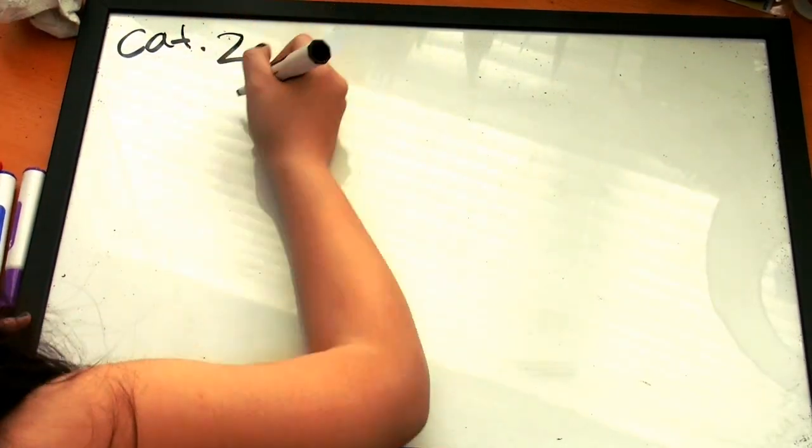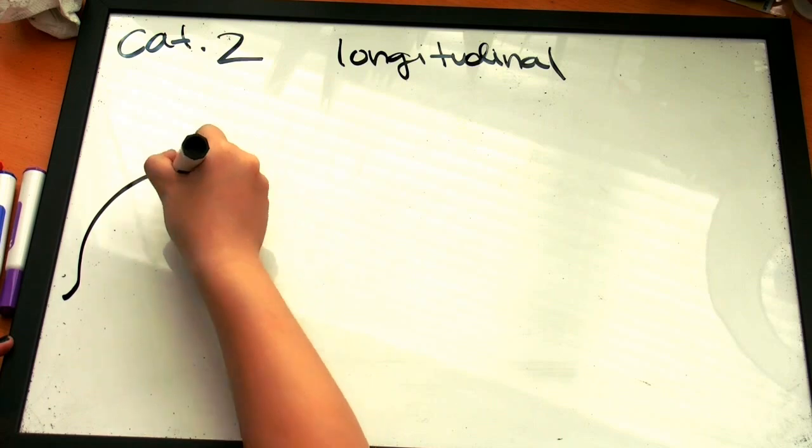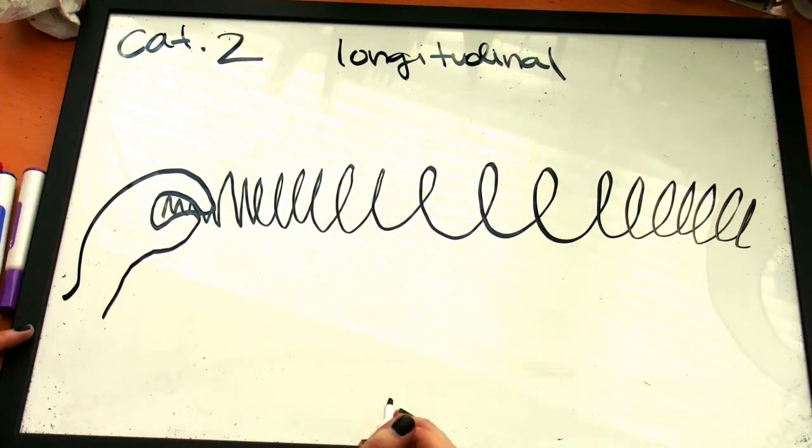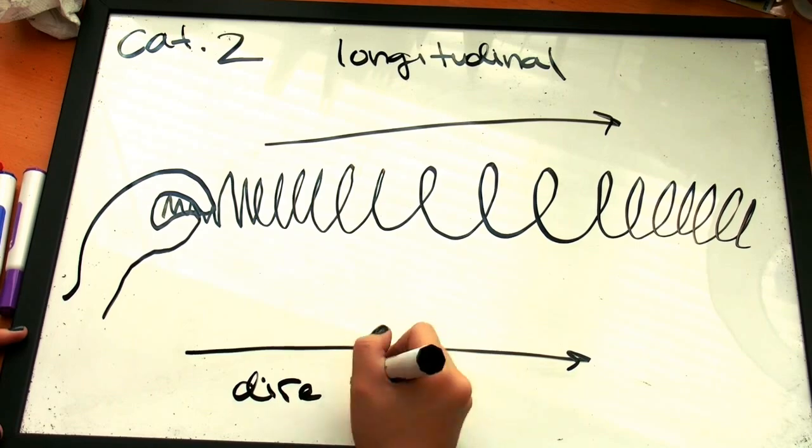The second is a longitudinal wave, which oscillates parallel to the direction of propagation. An example is when a spring is gathered up in coils and then released. The wave is both oscillating and being propagated in the horizontal direction.